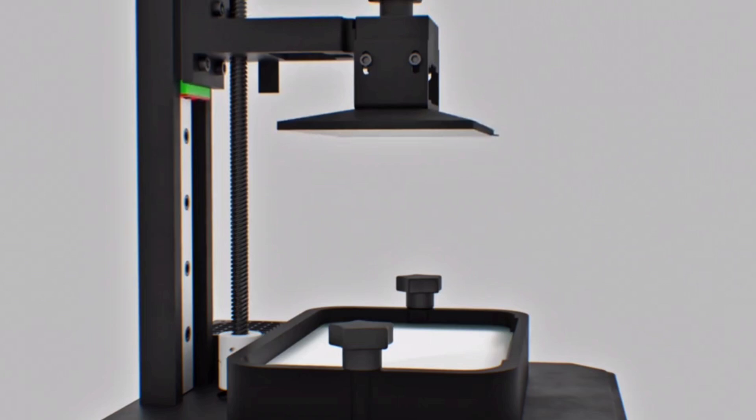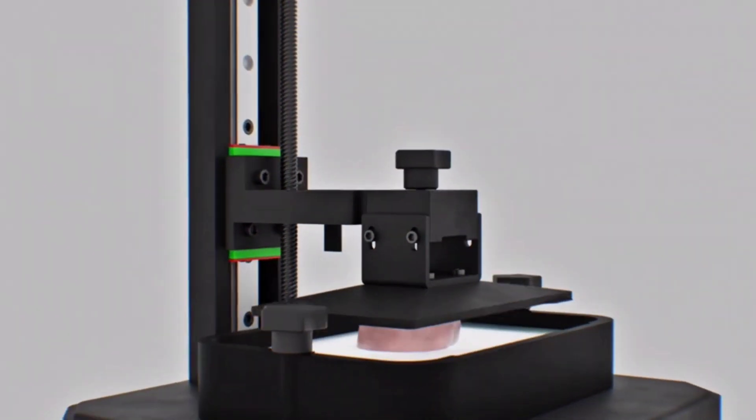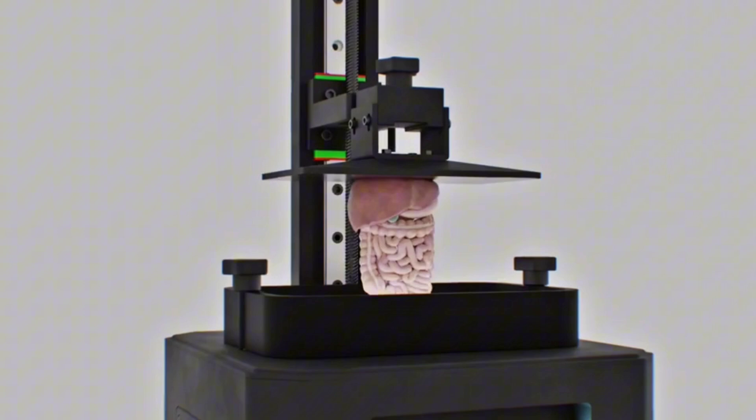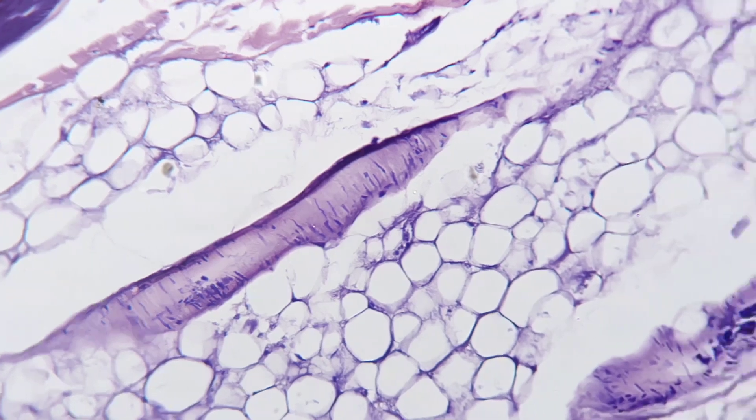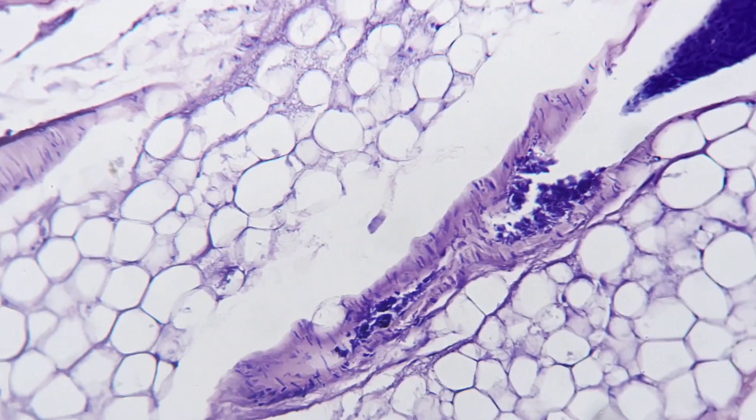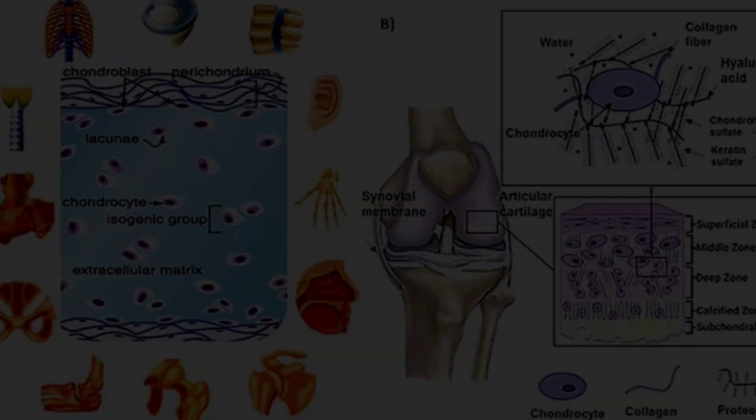The bioprinter's speed doesn't just save time, it increases cell survival rates as well. Faster printing means cells aren't exposed to prolonged handling or stress, which is essential for creating viable, realistic tissue models. This is especially important for delicate structures such as neural tissues or cartilage.